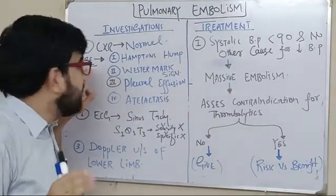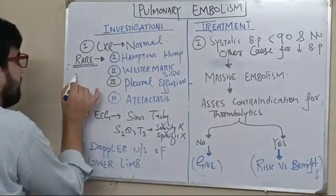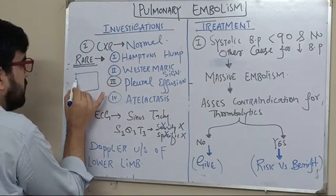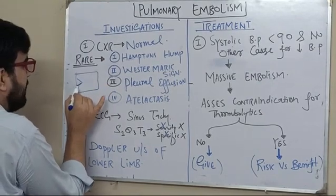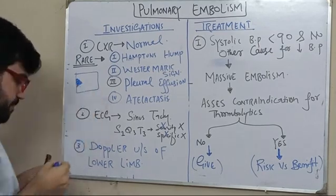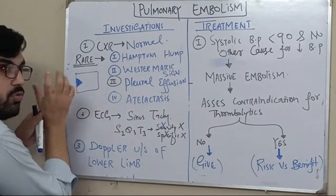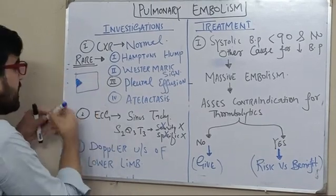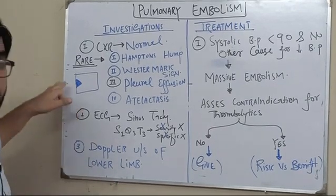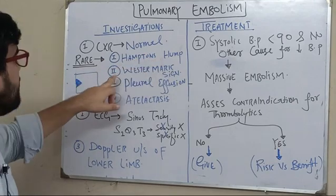The first rare finding is Hampton's hump. If this is your chest X-ray and this is your lung, there is a white opacity — Hampton's hump — which is a wedge-shaped white opacity. This is actually due to massive infarction in the pulmonary vasculature.